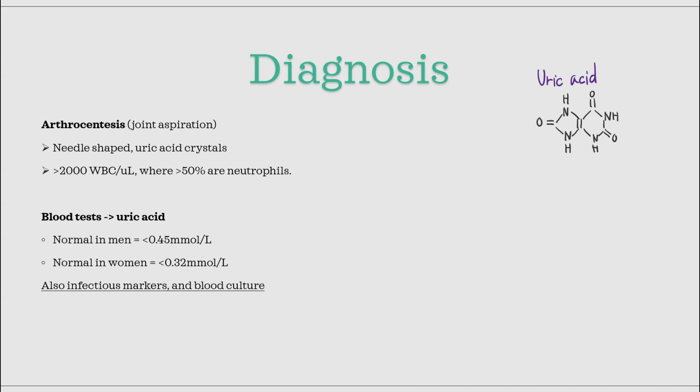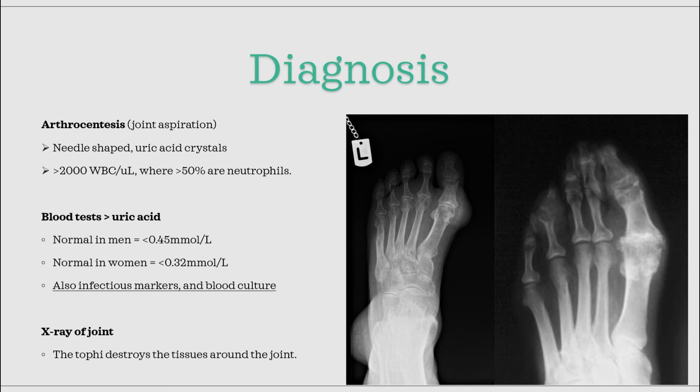Blood tests are also quite useful in gout. First, uric acid can be tested and can be an indicator for possible gout, but remember it doesn't have to be hyperuricemia for gout to occur. Infectious markers and blood culture should also be taken for differential diagnosis, as we are most scared about septic arthritis. Lastly, in the later stages of gout, x-rays can show destruction of the joint.